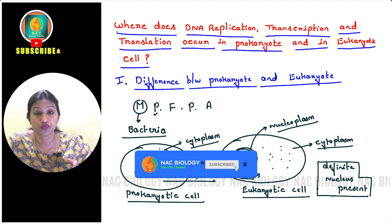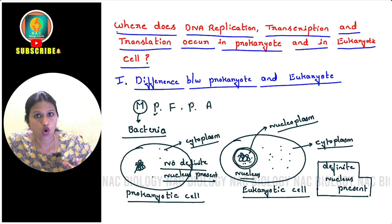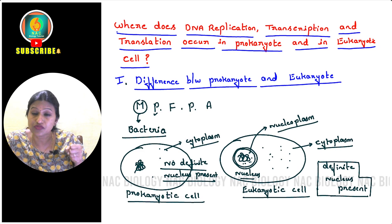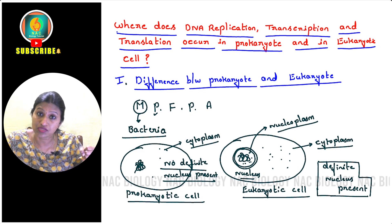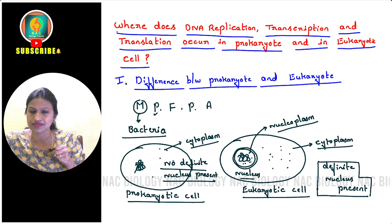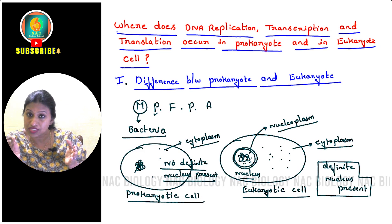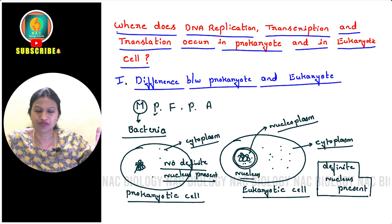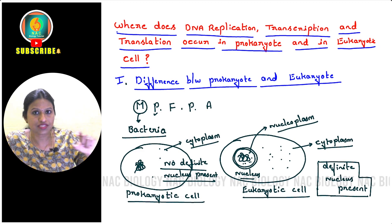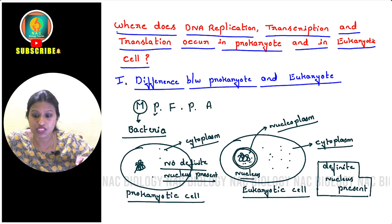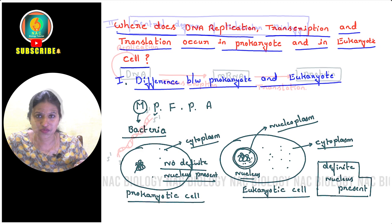All these proteins are encoded by genes which are present on the DNA. The process of how a protein is formed from a gene is the central dogma of molecular biology. This central dogma involves several steps, which we will now go through as we move to the actual topic.